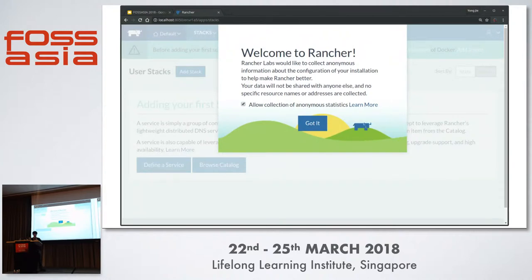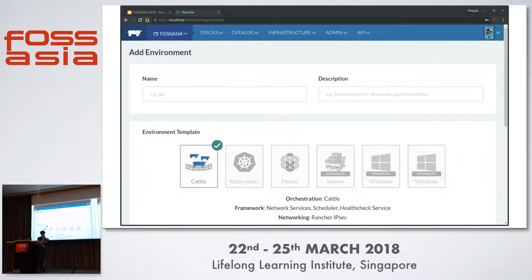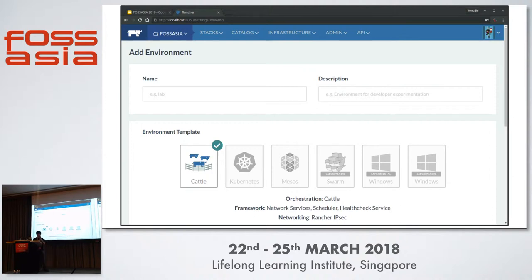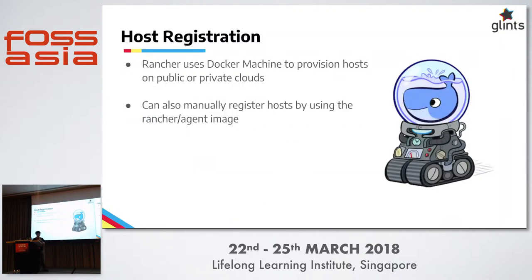One of the base concepts in Rancher is the environment. It's a logical container that isolates your resources. Rancher has role-based access control, so you can give permissions to different people within your organization to a specific environment, and that's where you choose which orchestration layer you want to deal with. The default is Cattle, which is a no-frills orchestration layer.